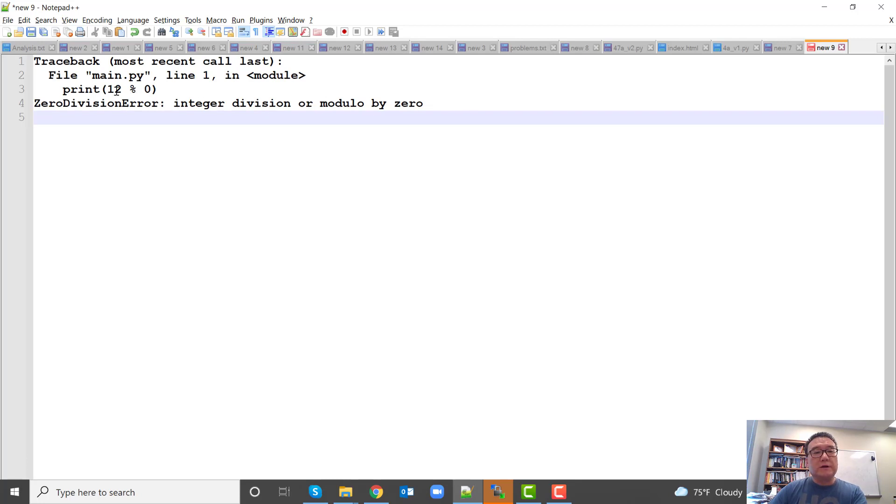Python doesn't allow us to do mod 0, which makes sense, because mod is essentially division. It's just that after dividing, we don't want the quotient, we want the remainder. I'm sure you have learned that in math, one of the rules about division is you cannot divide something by 0.